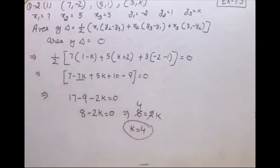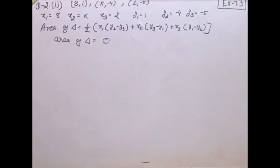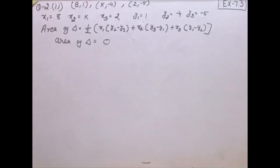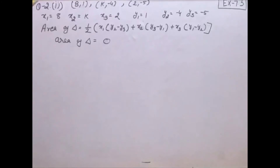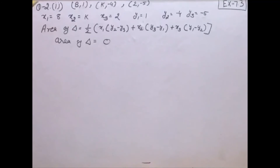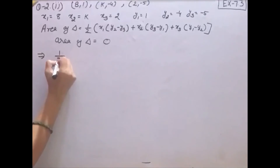Second part है। Given vertices हैं: (8, 1), (k, −4), (2, −5)। K की value find out करनी है। Condition same है — collinear points हैं, तो area of triangle equal to zero। Formula में given values put करेंगे।